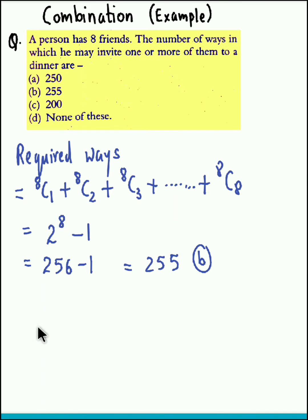Now the formula used over here is nC1 plus nC2 plus nC3 and so on up to nCn. This could be calculated as 2 raised to n minus 1, so we have applied this formula in order to get the answer.